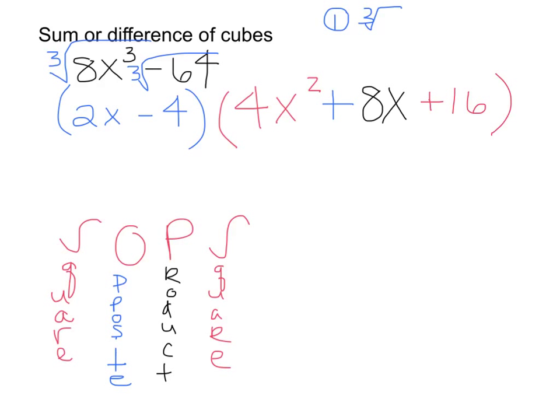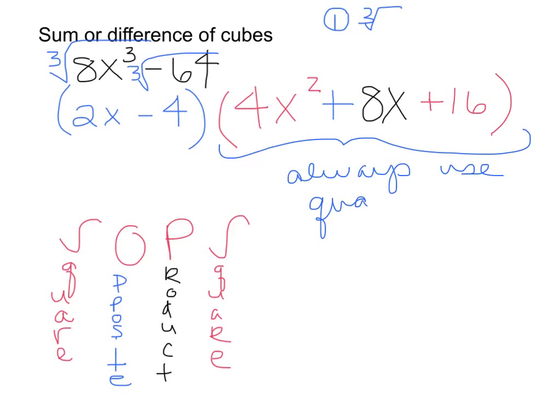When you go to solve, which we're going to do in the next section, this second parenthesis — the result from SOPS — you are always going to have to use the quadratic formula. The reason is that whatever you get from SOPS is always going to be imaginary. It's never going to not be imaginary.